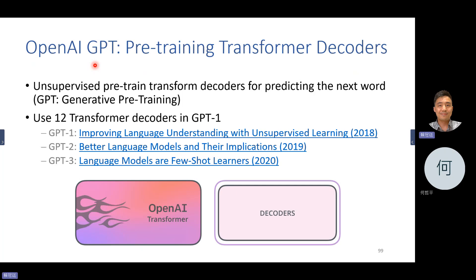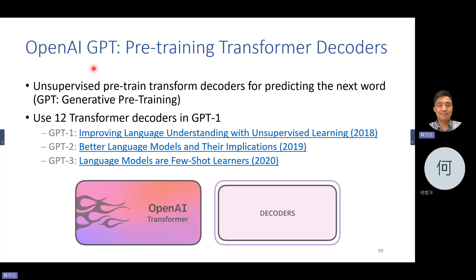Today's generative models are mostly about GPT and stable diffusion, but GAN was still very important just a few years ago.